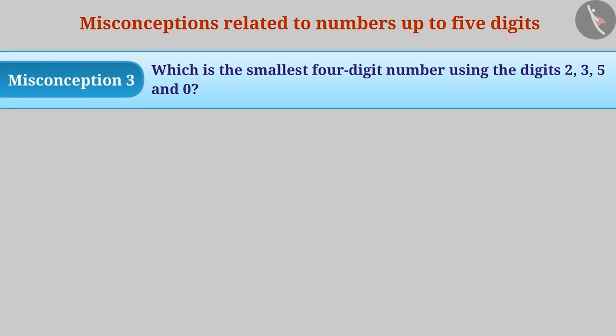Misconception 3: Which is the smallest 4 digit number using the digits 2, 3, 5 and 0?